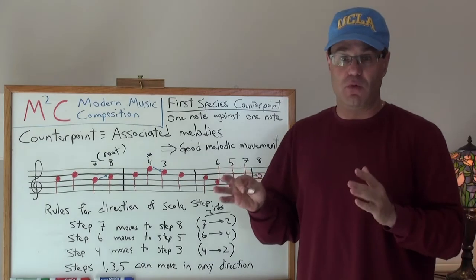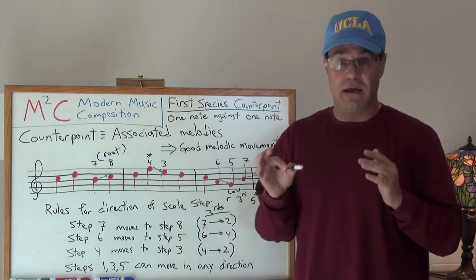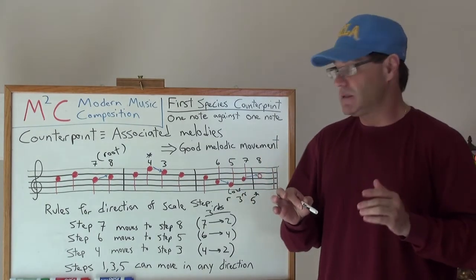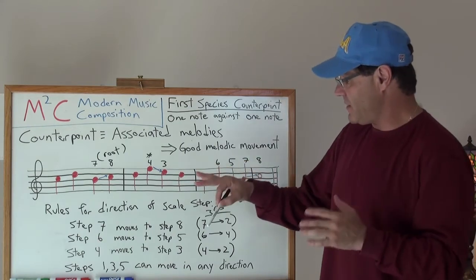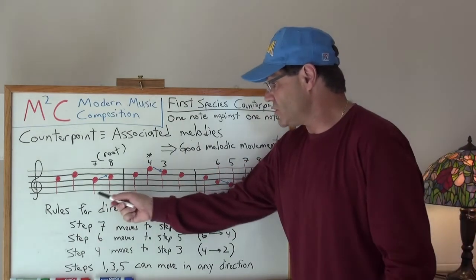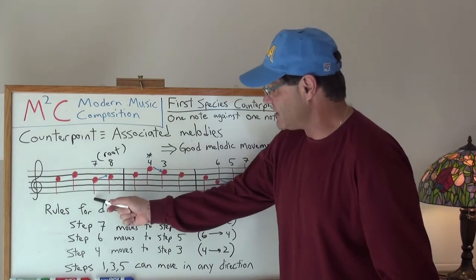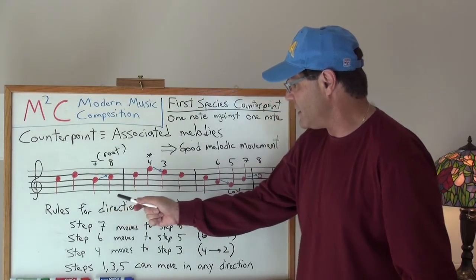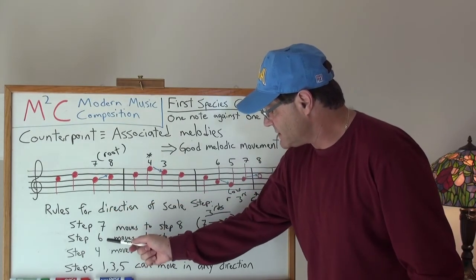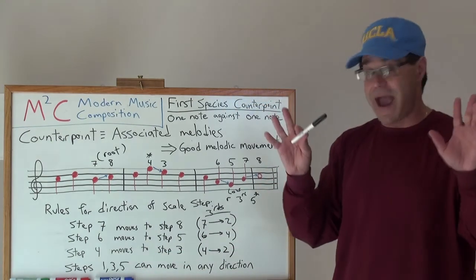Those are just some general remarks in building a good melody. And so, I think it's important to really think about this stuff and understand how this resolution works. This is actually called an active step. A seven would be, as the step, seven, six, and four are all active steps.